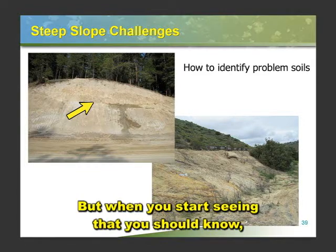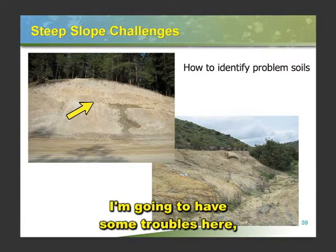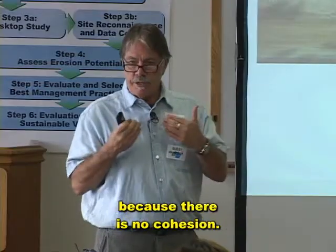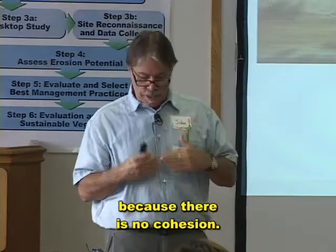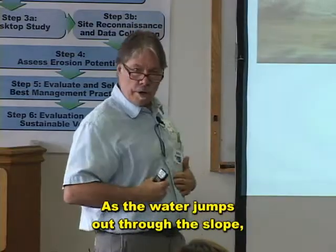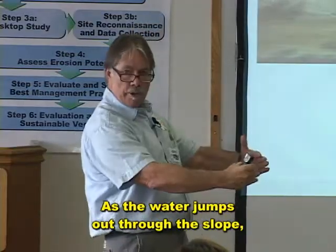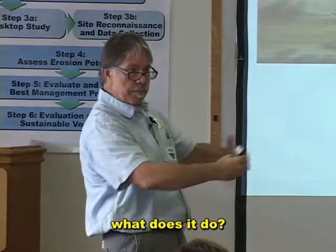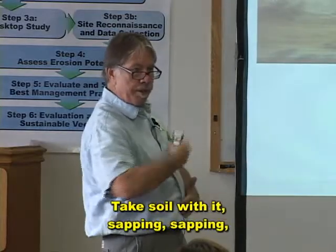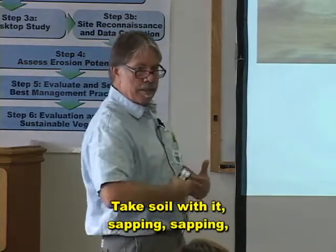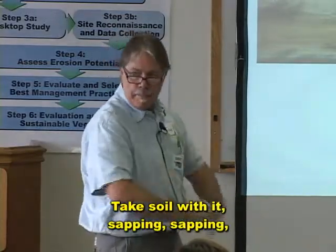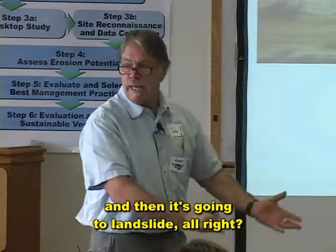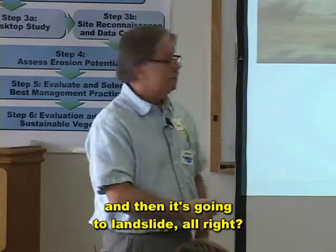But when you start seeing that, you should know you're going to have some troubles here because there is no cohesion. As the water jumps out through the slope, what does it do? It takes soil with it — sapping — and then it's going to landslide.